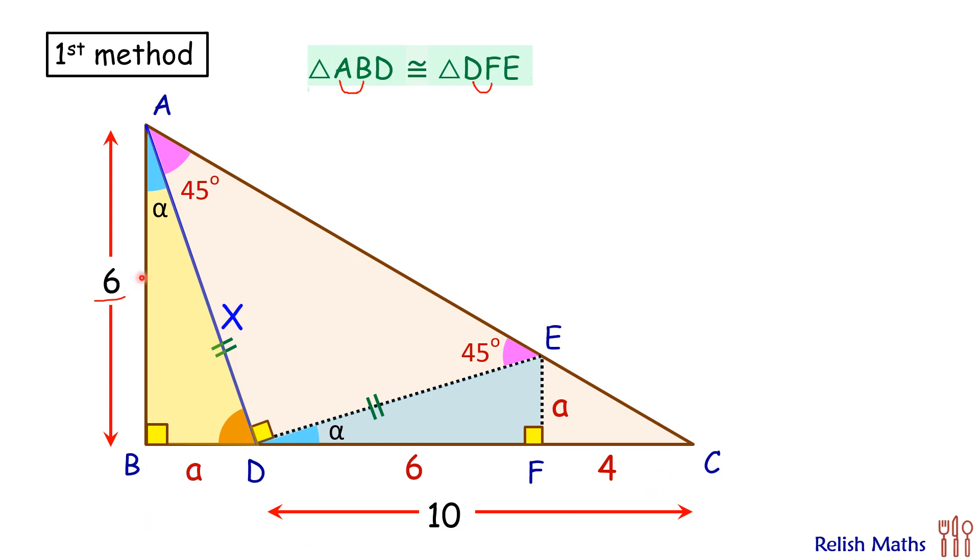Now if we'll consider the triangle ABC, that's this bigger triangle, and triangle EFC, that is this small triangle. In these two triangles angle C is common and both the angles here are 90 degrees each. Thus these two triangles are similar to each other and thus ratio of corresponding sides will be equal.